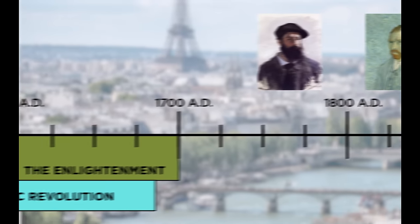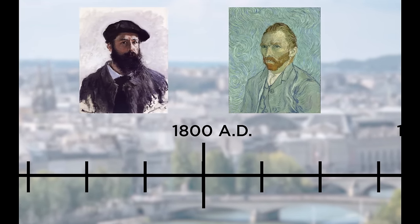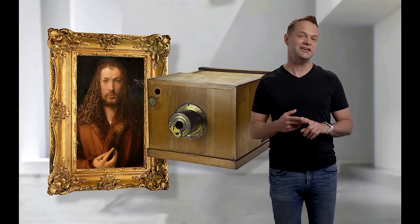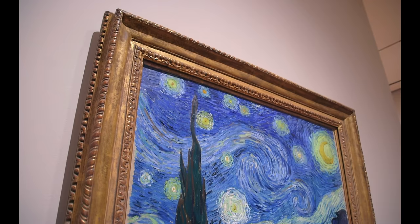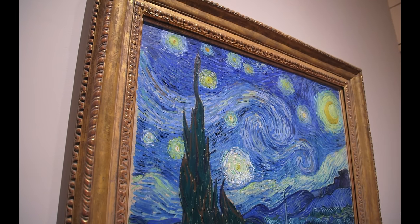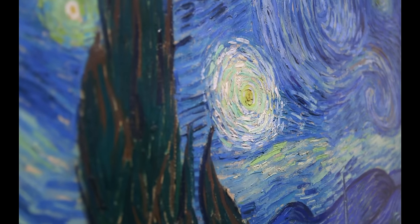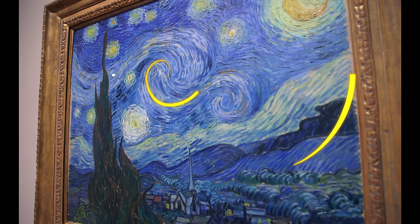Fast forward to the 1800s during the Impressionist period, where the invention of the camera and paint in tubes pushed art in a whole new direction. Artists like Van Gogh knew the power of visual balance, which is at the core of the golden ratio, in his most famous painting Starry Night.